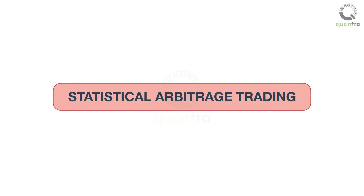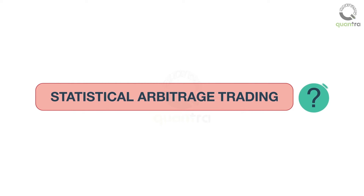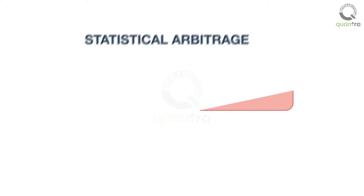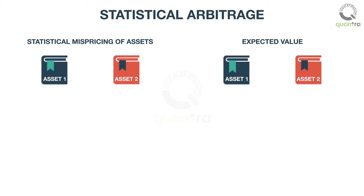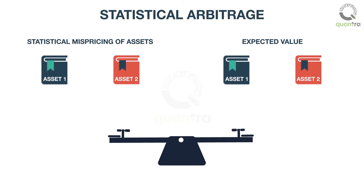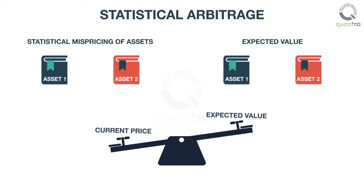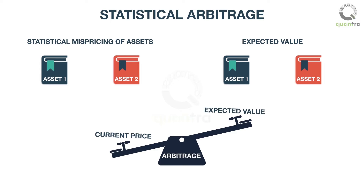In this video, we will understand what statistical arbitrage means and the steps involved in implementing statistical arbitrage strategies. Statistical arbitrage, or Stat-Arb, is based on the statistical mispricing of one or more assets compared to the expected value of these assets. In simpler words, if the quantitative analysis using current and historical market data suggests that prices are off from expected value, then it provides an arbitrage opportunity.